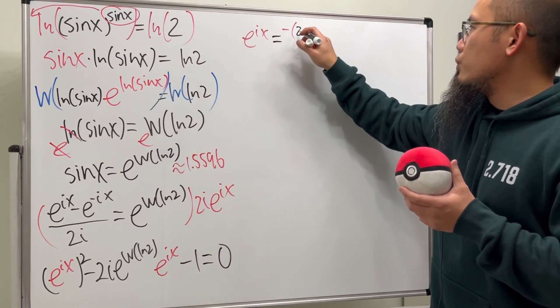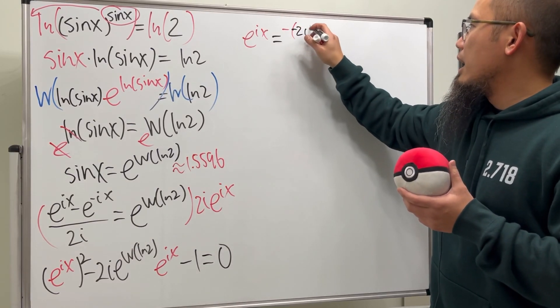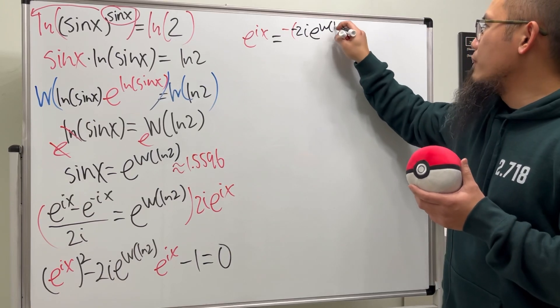We have 2, negative 2i, and then e to the w of ln2.